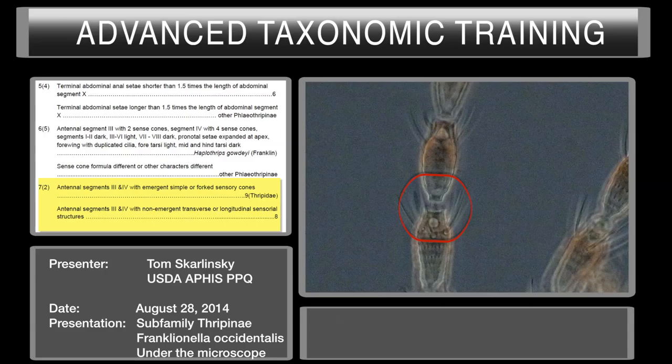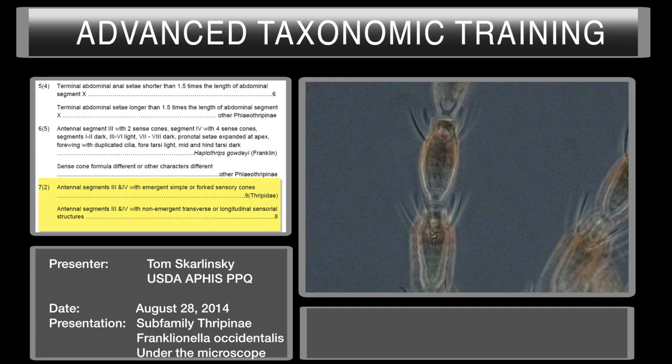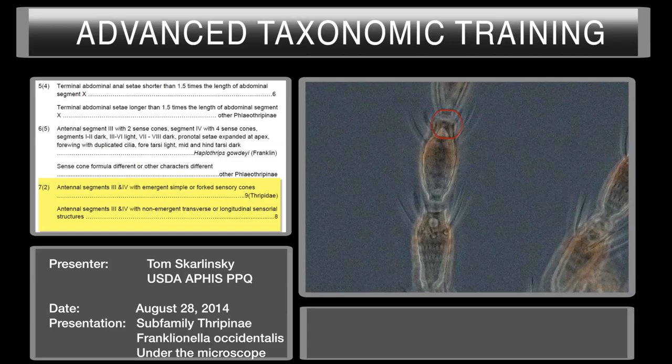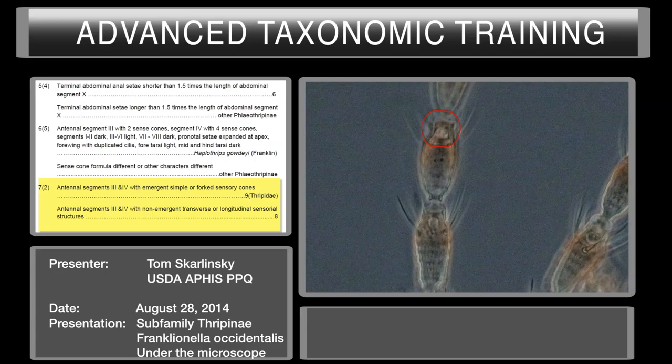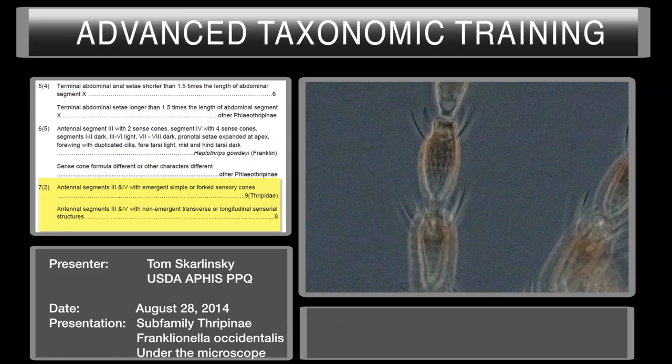It's right there. Loops right around. Usually that round base is pretty obvious. The actual four-sense cones a lot of times it's difficult to see both branches, so you usually see that large basal section as a point of reference. We've pretty much determined that we have emergent forked sensory cones. So we're going to move on, and we have the family Thripidae.